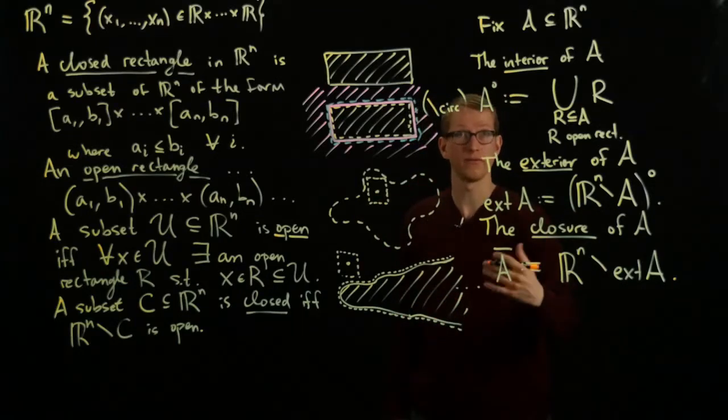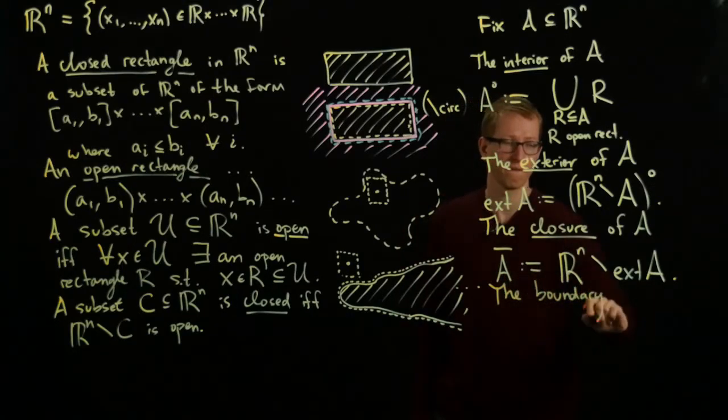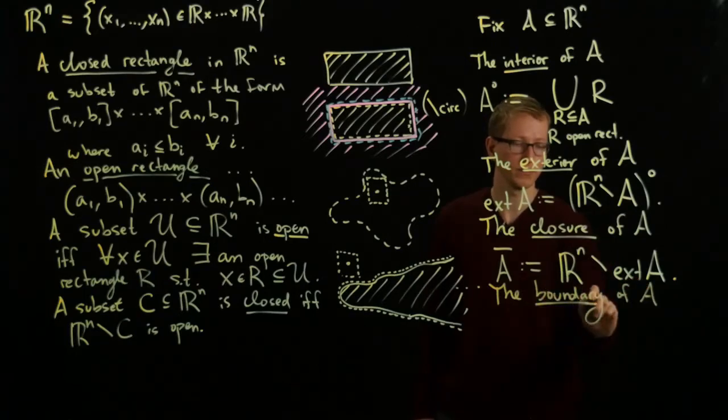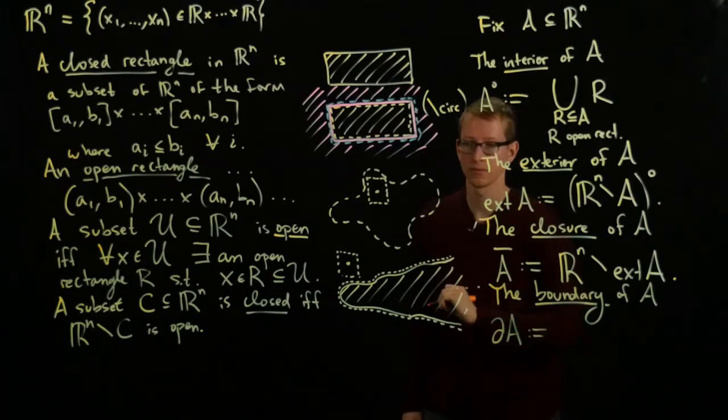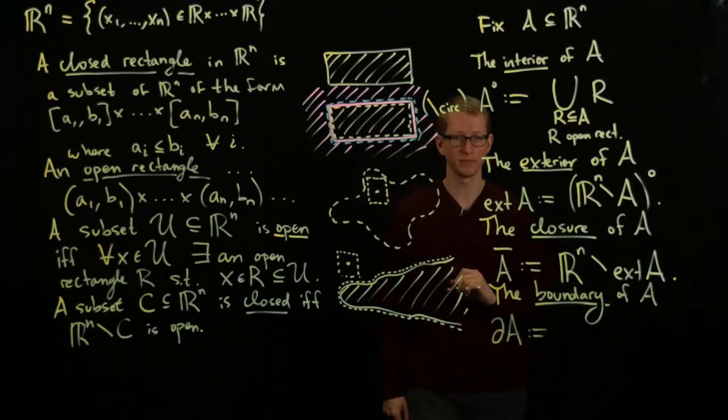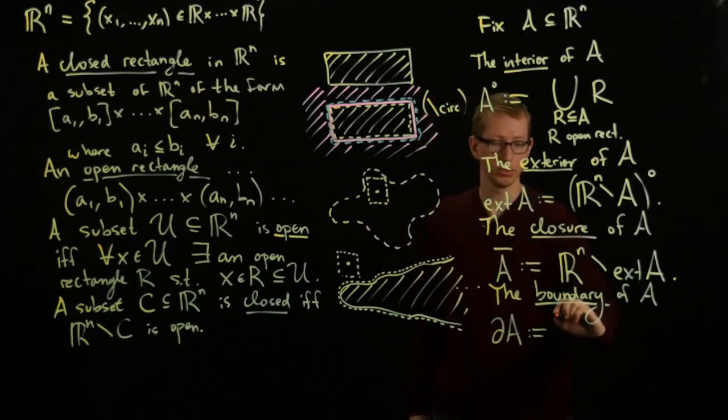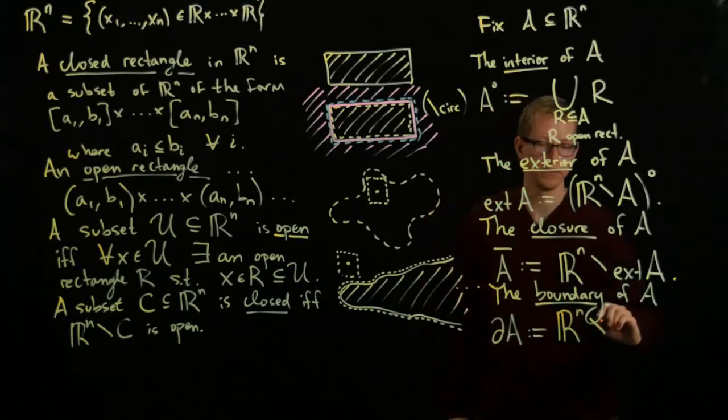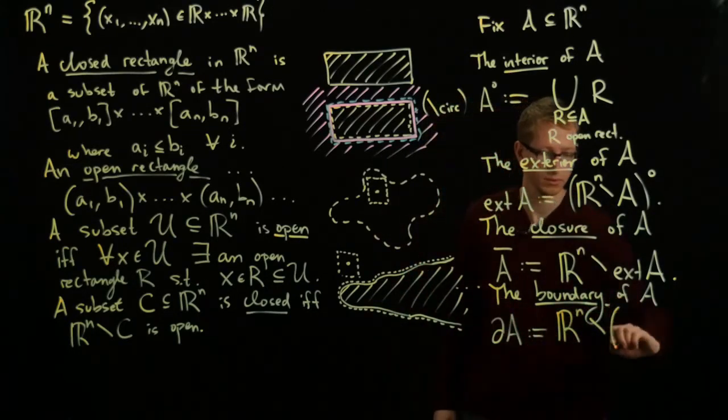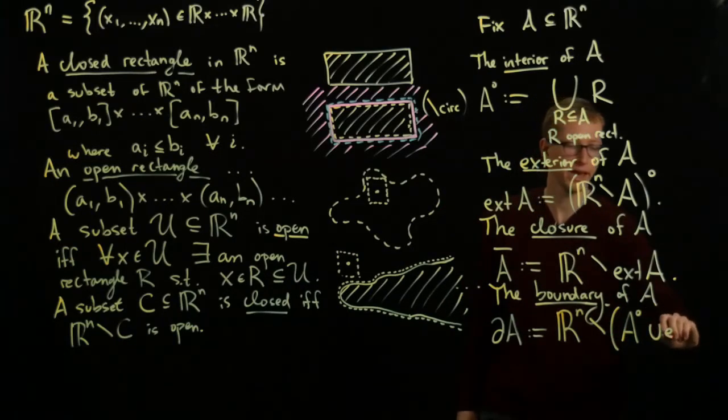The last thing that we need to look at, finally, is the boundary of A. Now we can finally make this notion precise. And the boundary of A is going to be, let's see to make sure that this is correct, it's going to be the difference of the unions of the interior of A and the exterior of A.